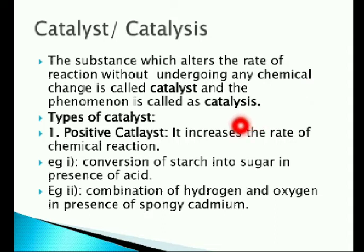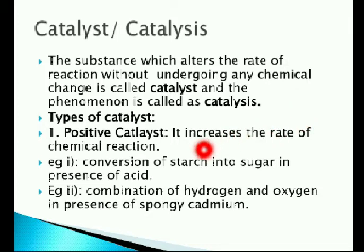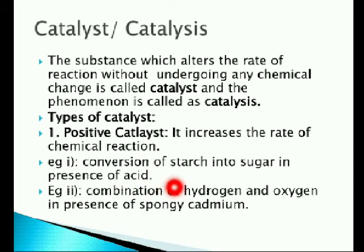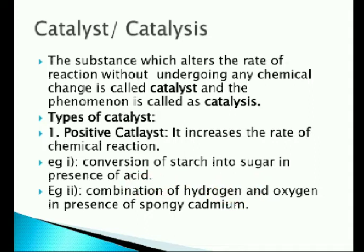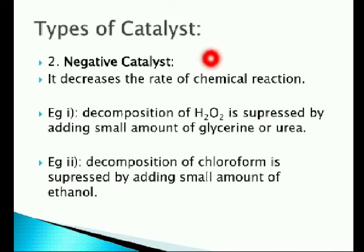There are three types of catalyst: positive catalyst, negative catalyst, and auto catalyst. The first one is positive catalyst — the substance which increases the rate of a chemical reaction is called a positive catalyst. Example one: conversion of starch into sugar in the presence of acid, where acid acts as the positive catalyst. Example two: combination of hydrogen and oxygen in the presence of spongy cadmium, where spongy cadmium acts as the positive catalyst.